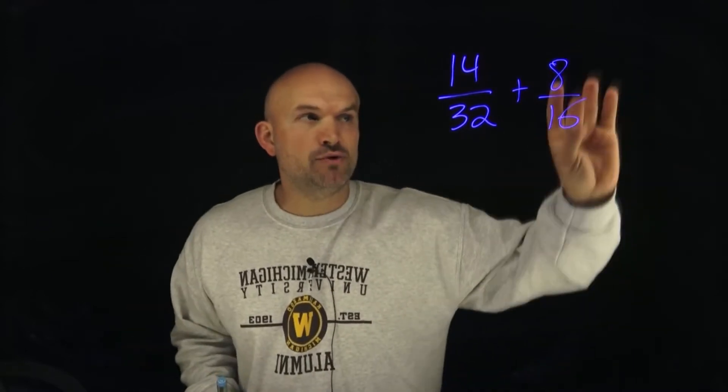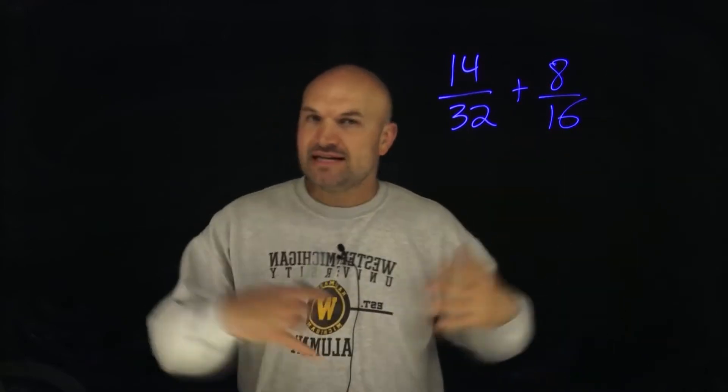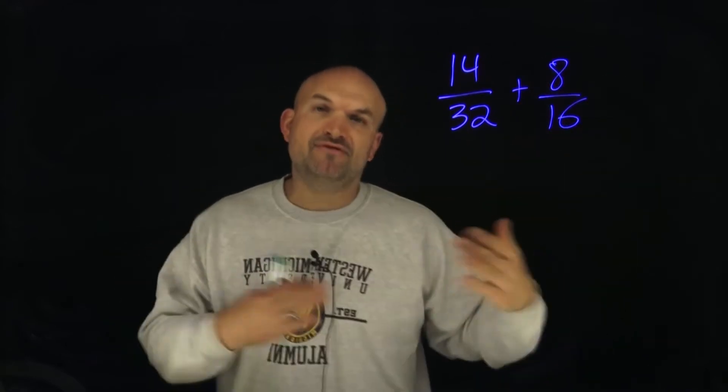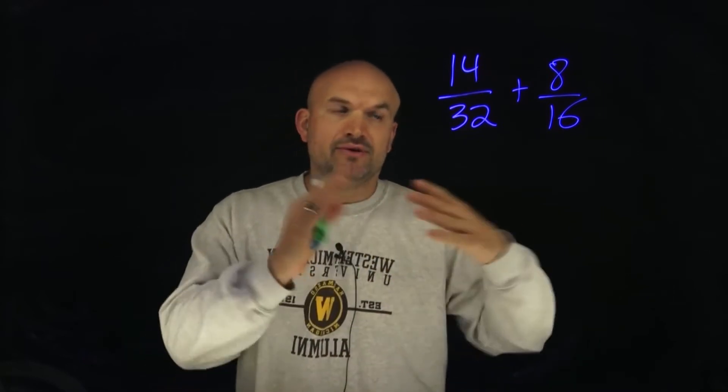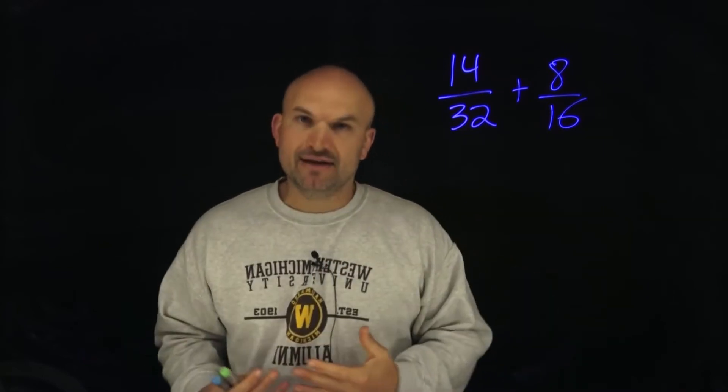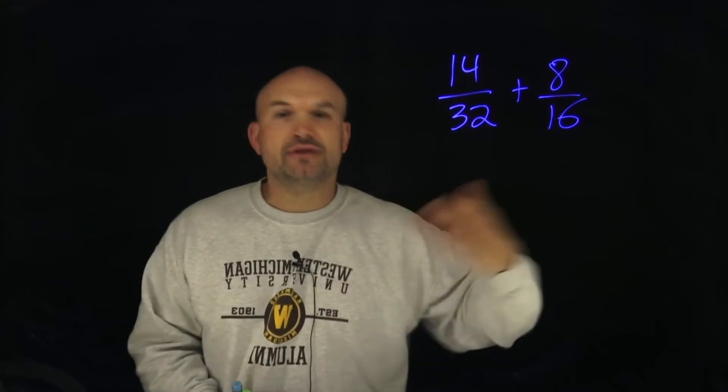And even if we just wanted to multiply 2 over 2 on this one to get 32, that's going to be fine. But again, we're going to have to simplify the results. And that's not wrong. You can definitely combine your two fractions and then simplify.